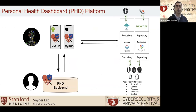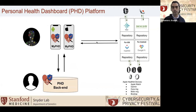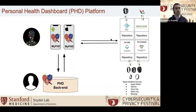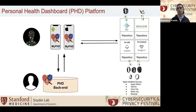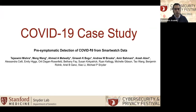One of the unique features about PHD is the fact that we are using a shared privacy and security model. We pull wearable data at the phone level — historical and real-time — everything pulls at the phone level. We de-identify it, apply differential privacy methods, remove all PHI information, encrypt it, and send it to the backend.